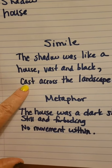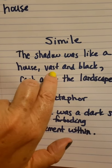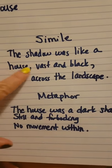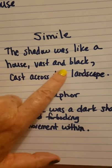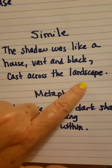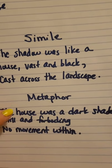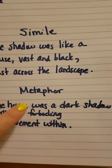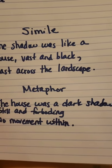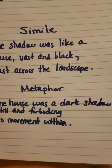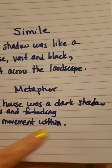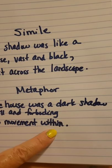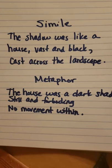I used 'vast' and 'cast' because those two words sound alike — they're rhyming words and it gives it a nice flow. The shadow was like a house, vast and black, cast across the landscape — I'm saying that the shadow was big. Then for a metaphor: 'the house was a dark shadow.' This is a direct comparison — it wasn't like a dark shadow, it was a dark shadow. The house was a dark shadow, still and foreboding, no movement within. So it's kind of a big, creepy house.